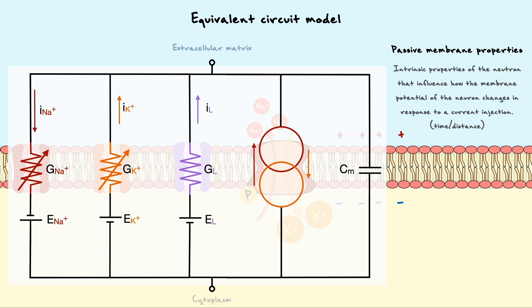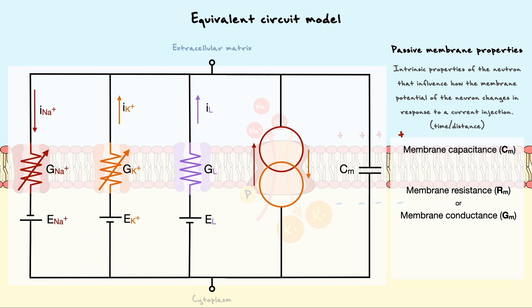We have already seen two of the three properties. The first property is the membrane capacitance. The second is the membrane resistance or conductance, depending on how you see it. And the third property is the axial resistance. For the moment, I know that they do not mean much beyond what we have discussed, but as we go through the equations, these properties will become much clearer.